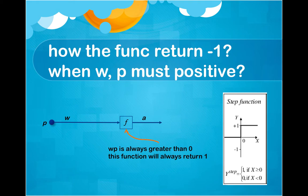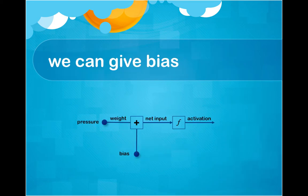What if we have constraints that the pressure and the weight both always to be positive number? Can this step function return minus 1? Because W multiplied by P will always greater than 0. That is reason why we want to have bias value in the neuron.